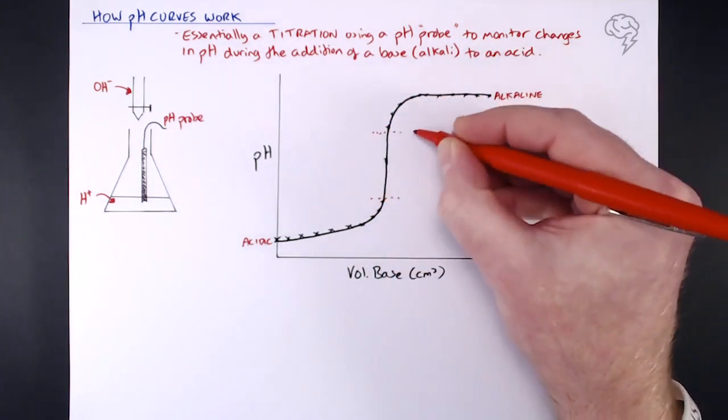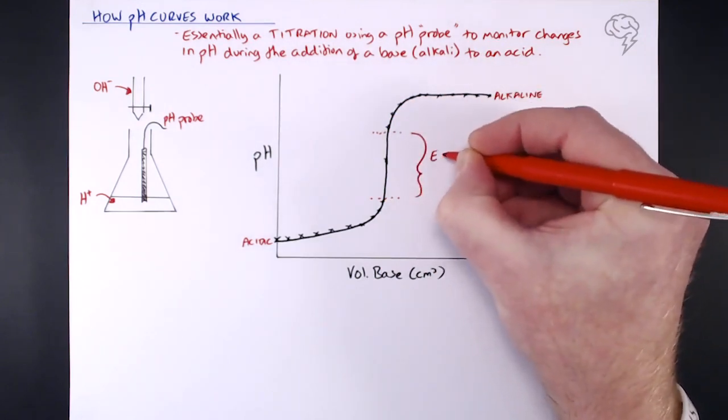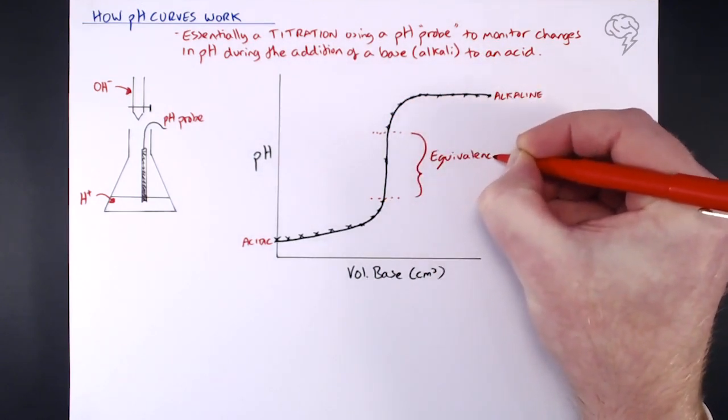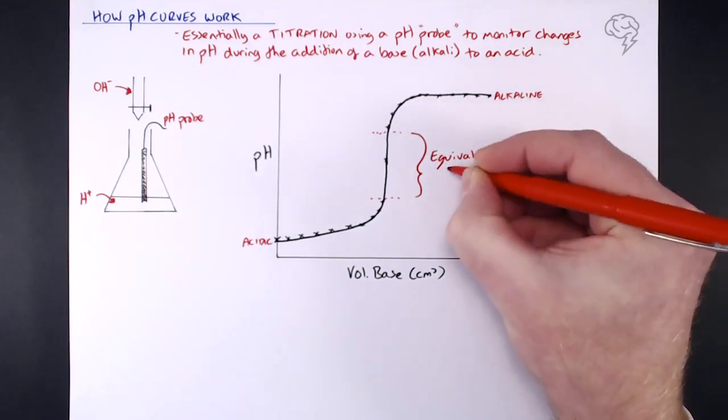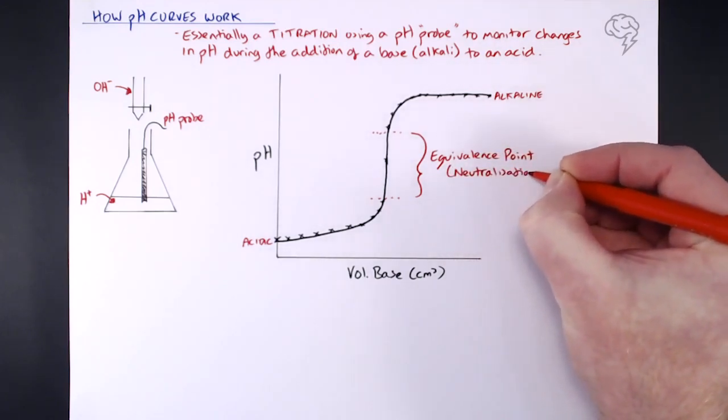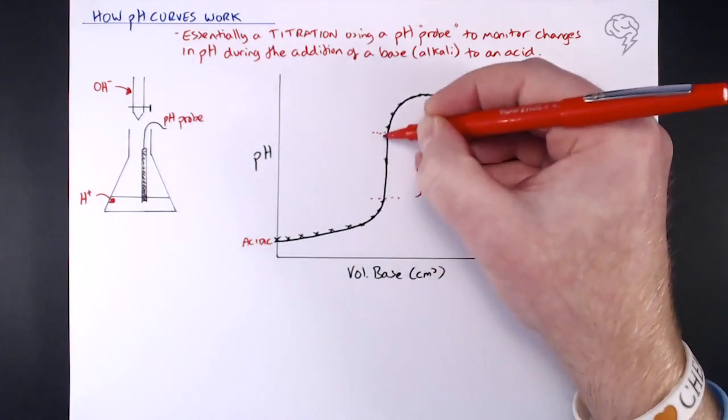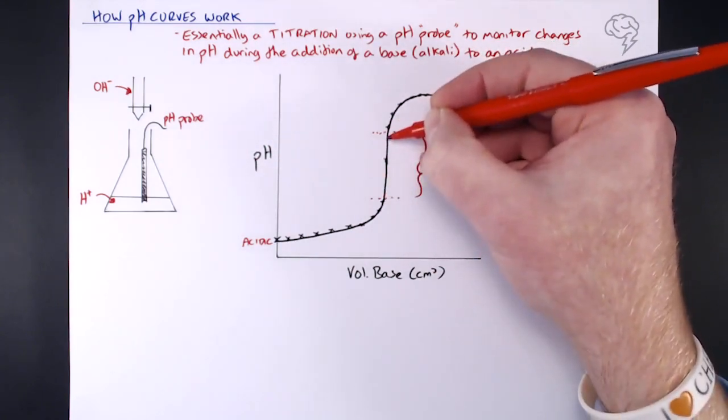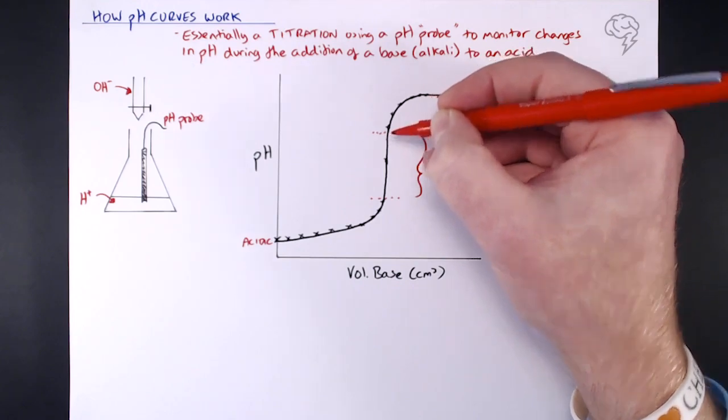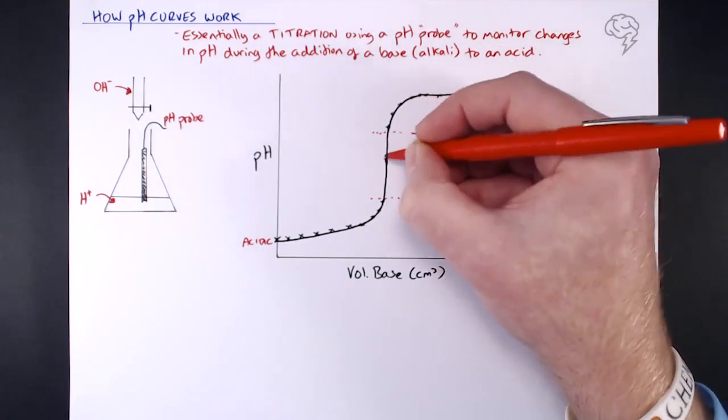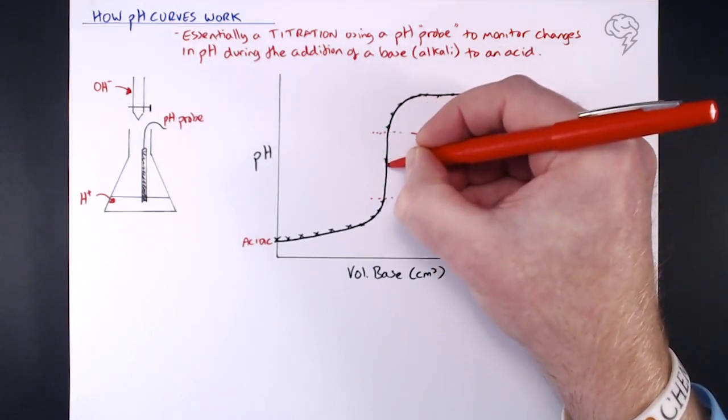That's the point at neutralization. Now using this equivalence point, if you take this - sometimes it's not perfectly vertical here depending on how accurate your results are - but if it is perfectly vertical you can take the middle of this and extrapolate down.